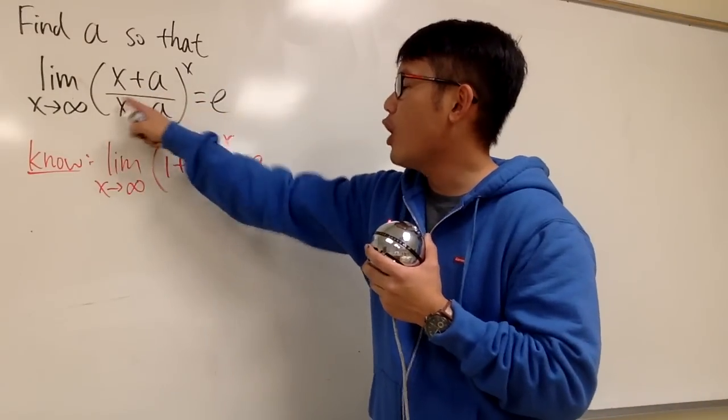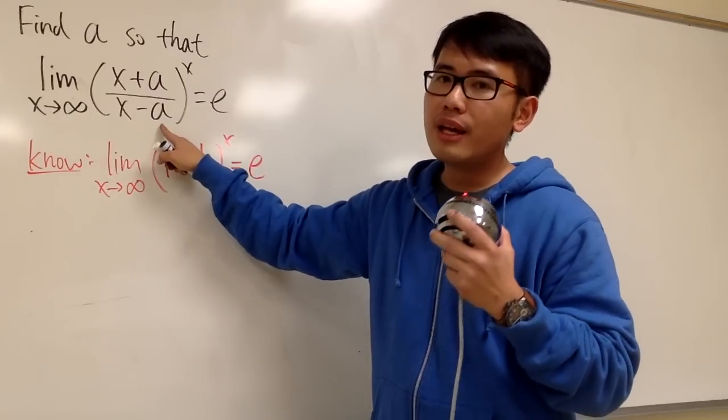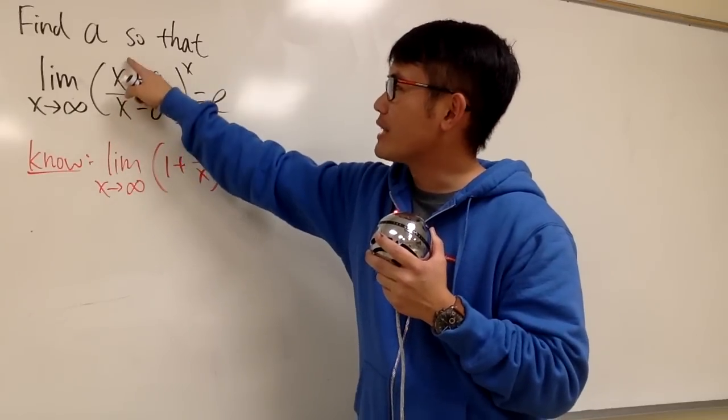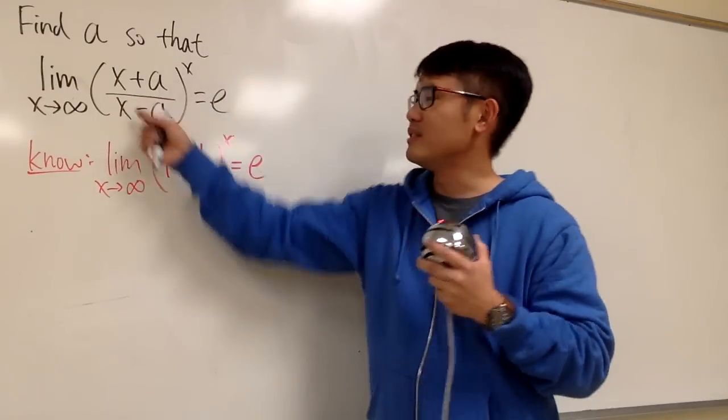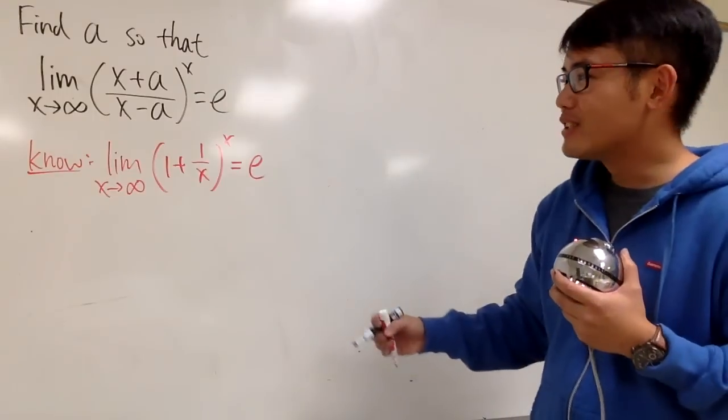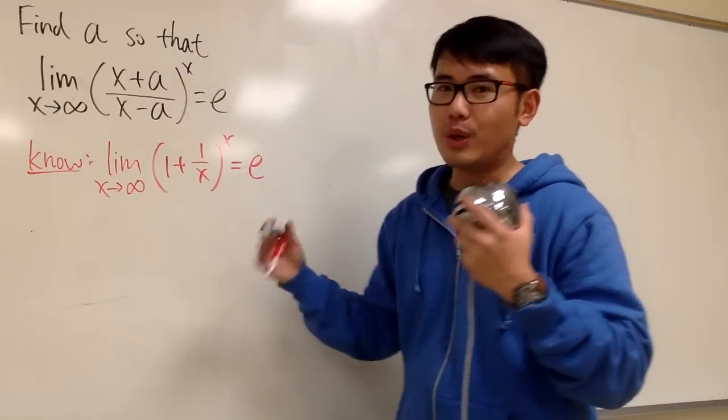Well, you see, this is x plus a over x minus a. The good thing is that the degree on the top, this is 1, the degree on the bottom is also 1. We can do some long division.